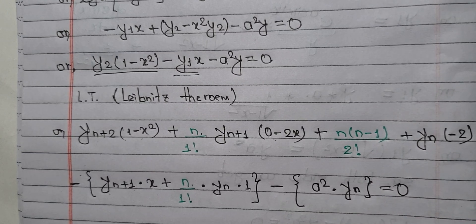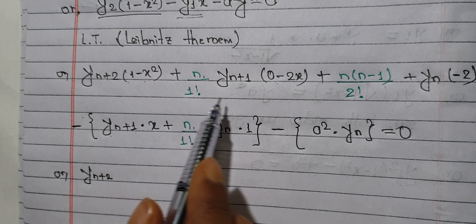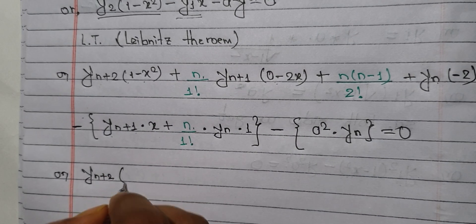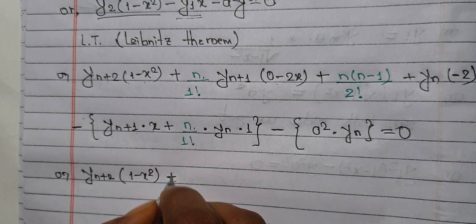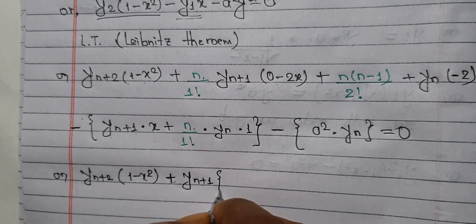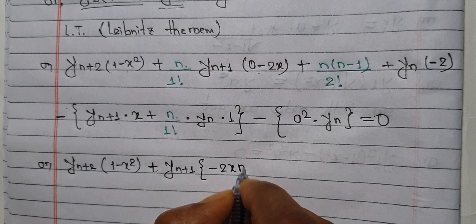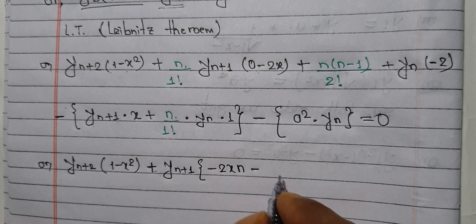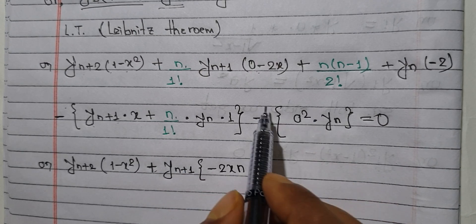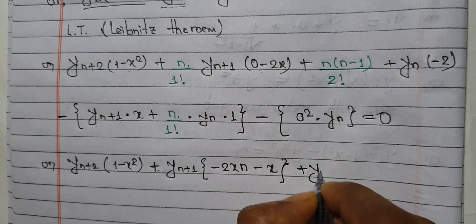Applying Leibniz's theorem, which gives y(n+2) equals zero. So we have (1 minus x squared) y(n+2) plus y(n+1) times the appropriate coefficient equals zero. One minus x squared directly multiplied with y(n+1) gives the required expression.